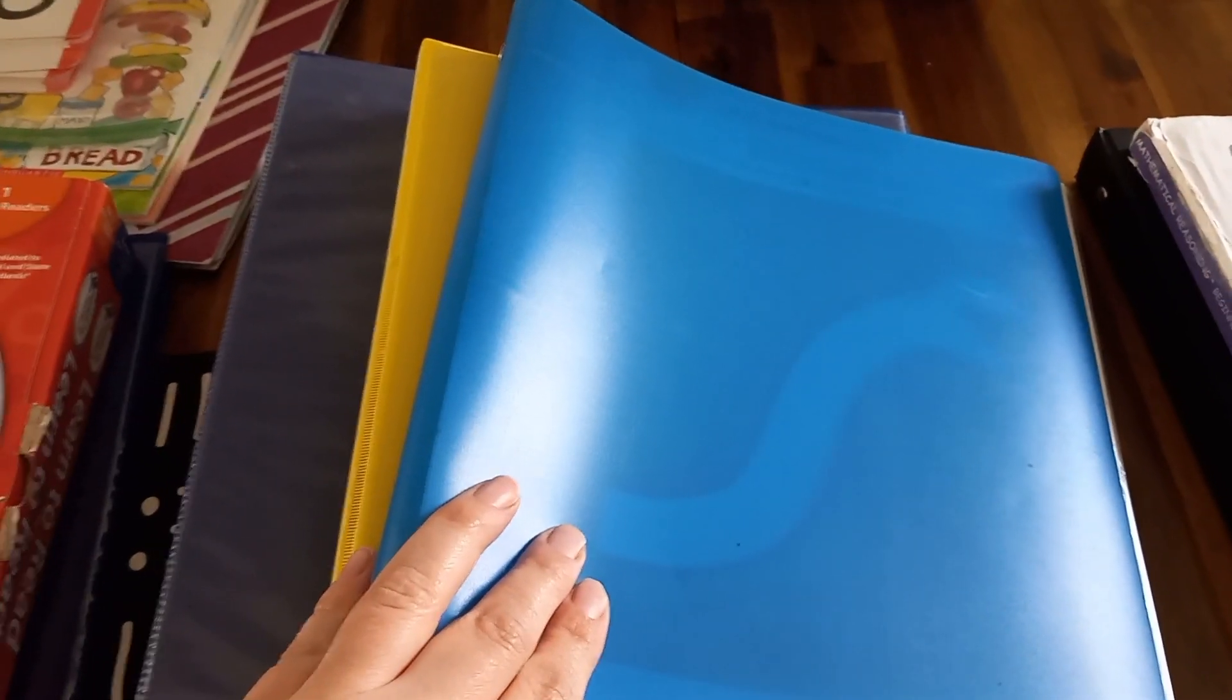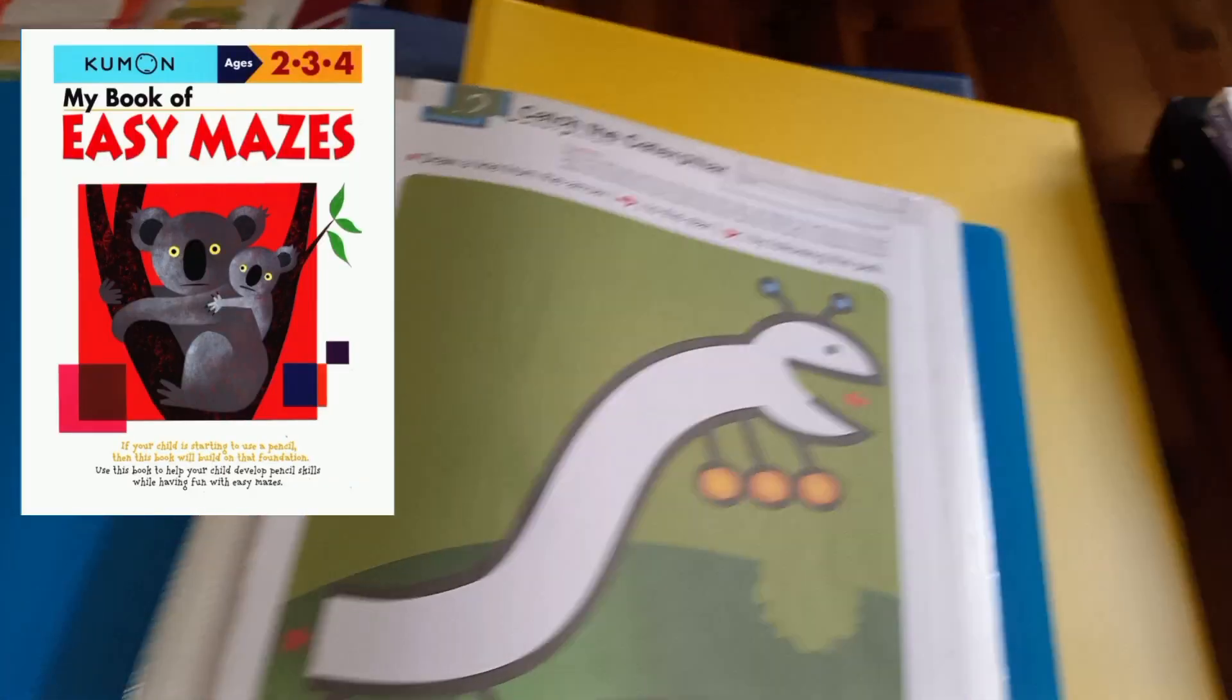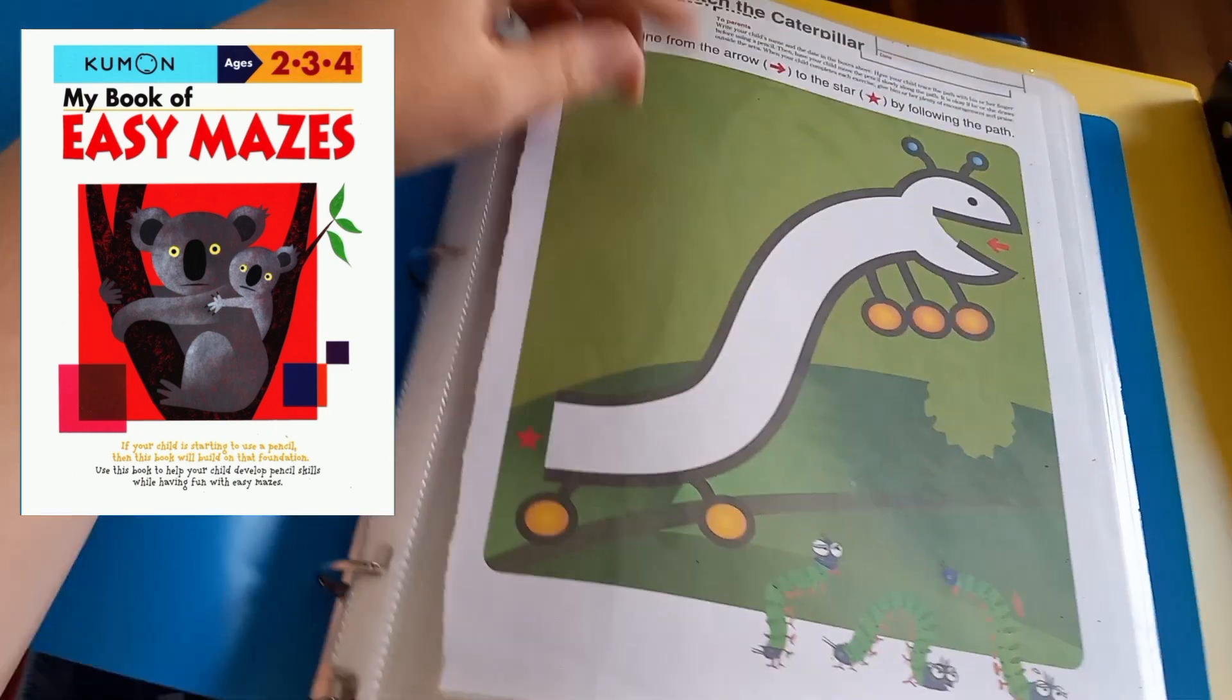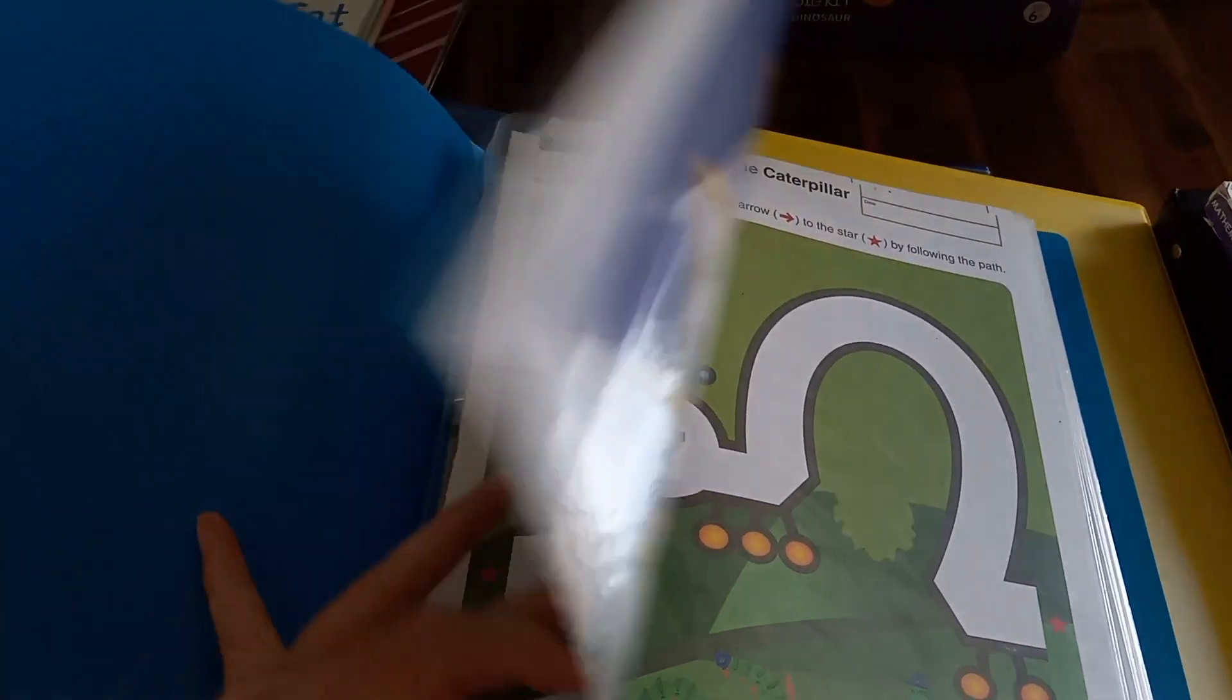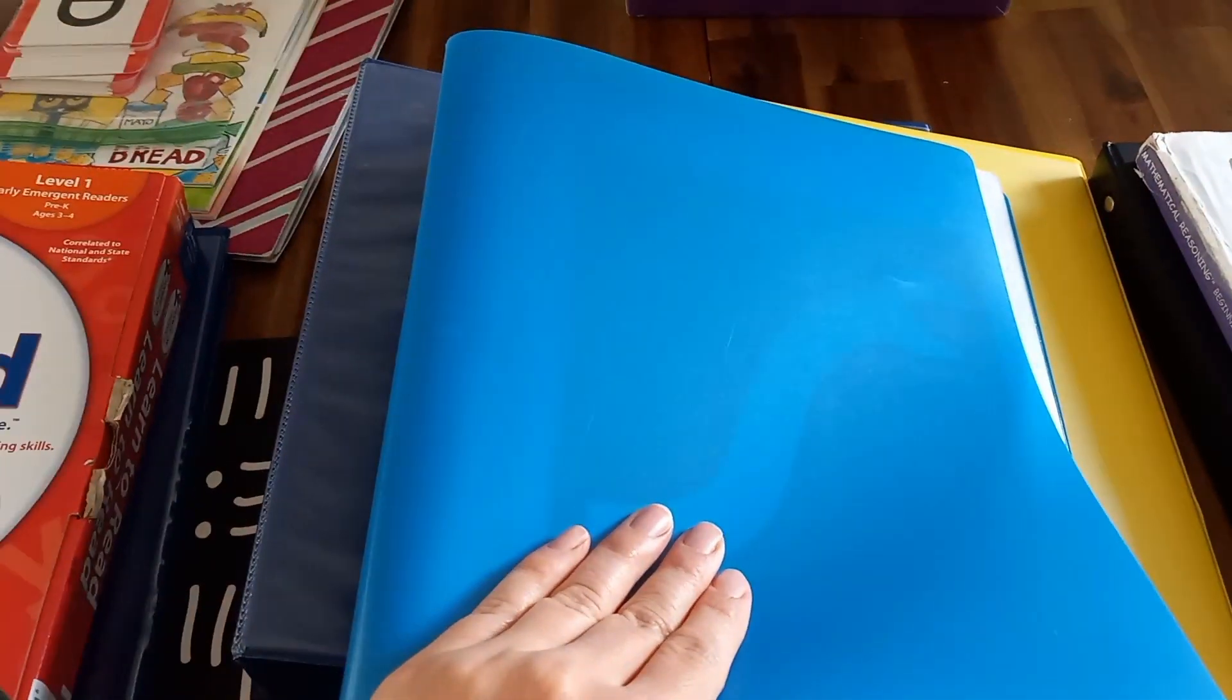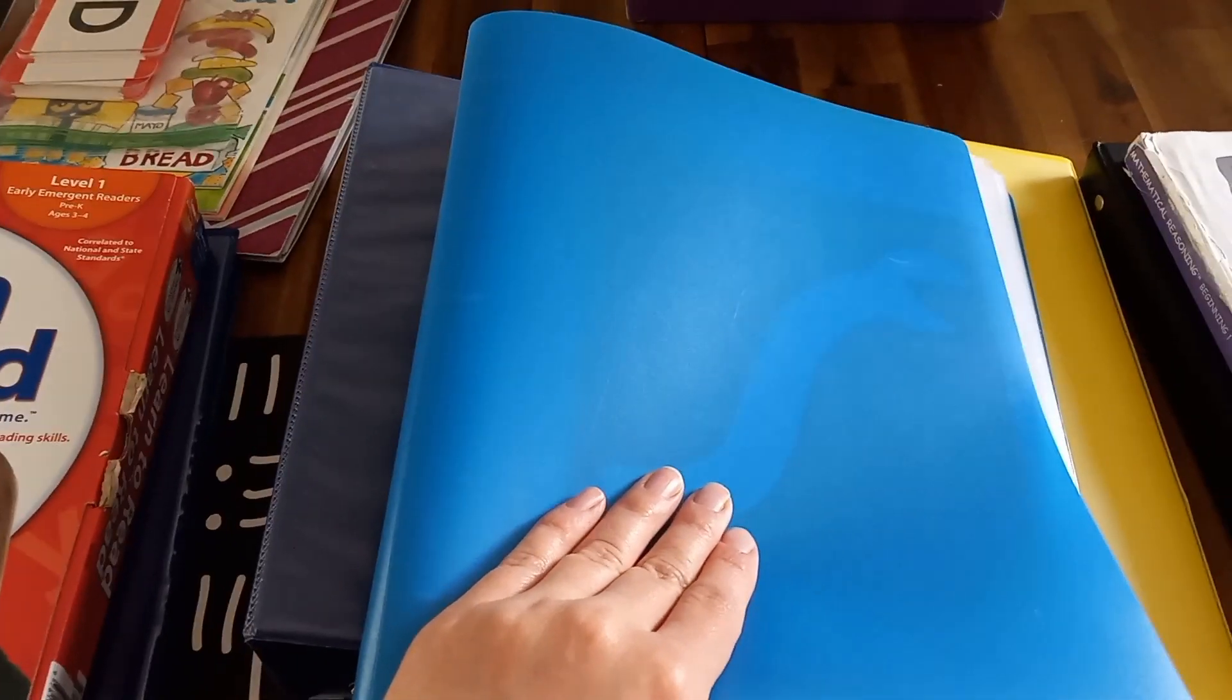So for starters, if your child does not have good pen control, you're going to want to start with something easy. This is a book from Kumon and it's actually a maze book. What I do with a lot of my curriculum is I take it and put it in sheet protectors and then in a binder, in a three ring binder. That way I can use it for multiple children instead of having to buy the books over and over again. And in turn, it saves quite a bit of money.